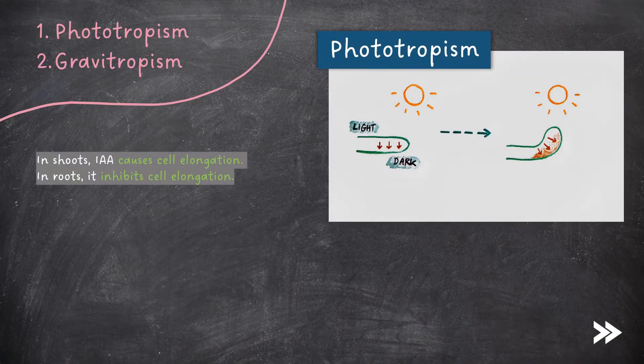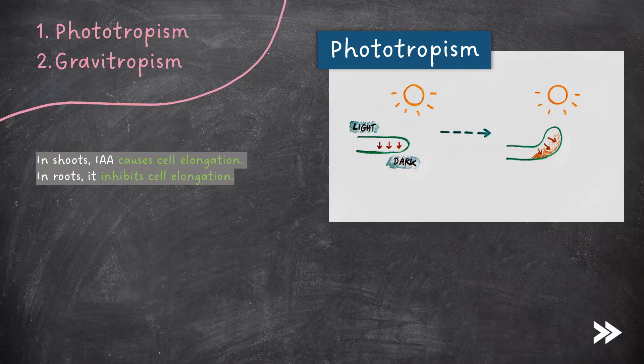In shoots, IAA causes cell elongation. In roots, it inhibits cell elongation. It does the opposite.